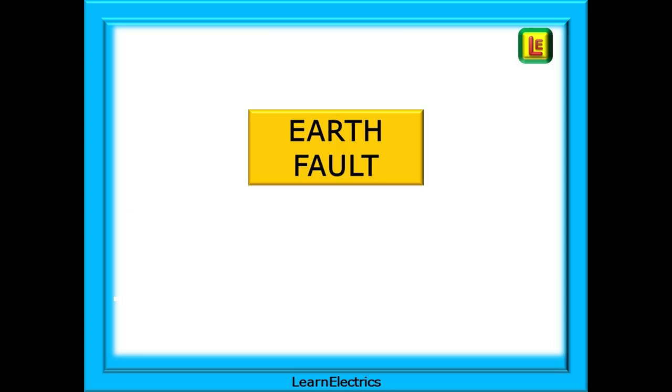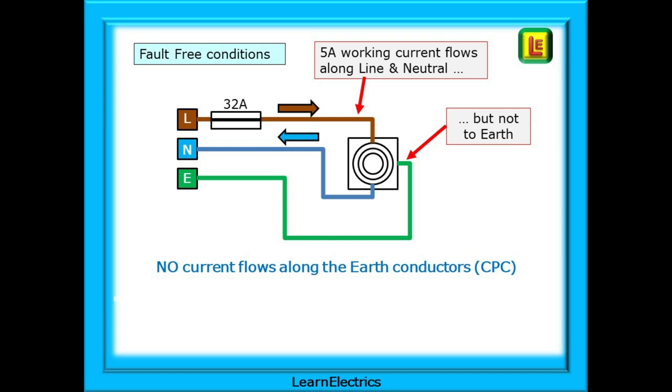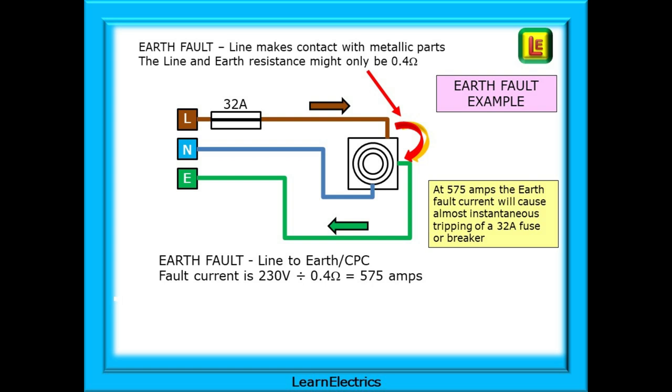The third type of overcurrent is the earth fault. If we begin with a fault-free scenario and use the same cooker ring again, we can see that the 5 amps of working current flows along the line and neutral wires but nothing along the earth conductor. The earth or CPC is connected to the metallic casing of the cooker. Now let's have an earth fault. Something happens and the line conductor makes contact with the metallic parts of the cooker. This effectively bypasses the cooker ring and the cooker ring resistance. Earth fault current flows along the line conductor through the metallic casing to the earth or CPC wire that is attached to the cooker. And this will be a low resistance path. If we say that the total resistance of the line and earth path is only 0.4 ohms, how much earth fault current will flow and will it cause the 32 amp breaker to trip? Using Ohm's law again, 230 volts divided by 0.4 ohms is 575 amps.